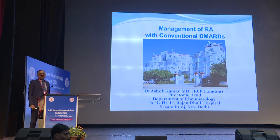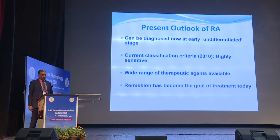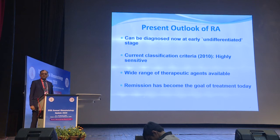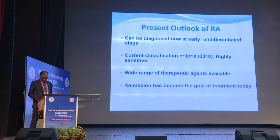Good morning. I have been asked to speak on the use of DMARDs in management of rheumatoid arthritis — by DMARDs I mean conventional DMARDs, conventional disease-modifying anti-rheumatic drugs. The present outlook of RA has really changed over the years. The disease can now be diagnosed at a very early undifferentiated stage; the current classification criteria are highly sensitive. We now have a wide range of therapeutic agents available, and our goal of treatment today is remission.